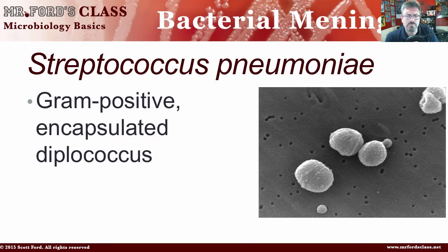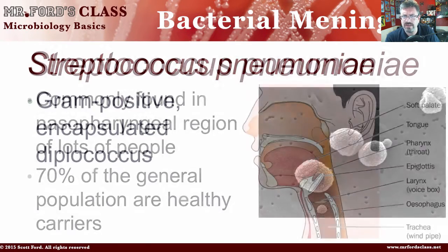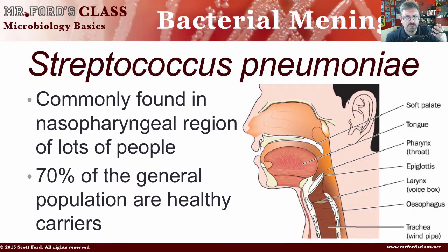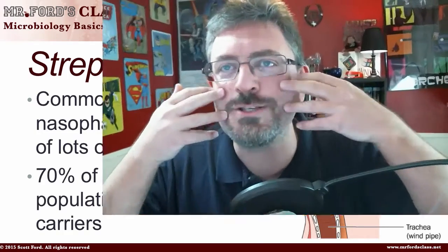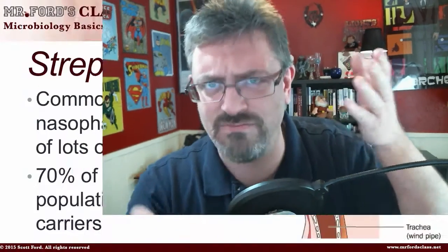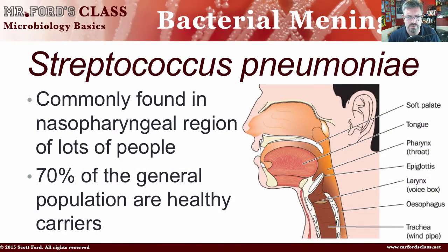It's a gram-positive encapsulated diplococcus bacteria. It's commonly found in the nasopharyngeal regions of lots of people. The nasopharyngeal — the nasal area and your oral area have a common connection, which is why you can shoot milk out of your nose. You have this connection with the nasal cavity and the oral cavity in the back of the head. If you don't know what I'm talking about yet, you'll get it in anatomy.